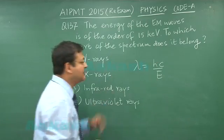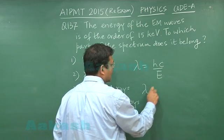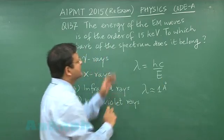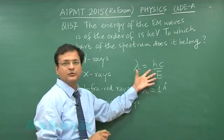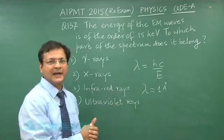If you will calculate lambda, lambda will be coming out approximately around 1 angstrom with the given value of 15 kilo electron volt. If you calculate, of the order of 1 angstrom it will be coming.